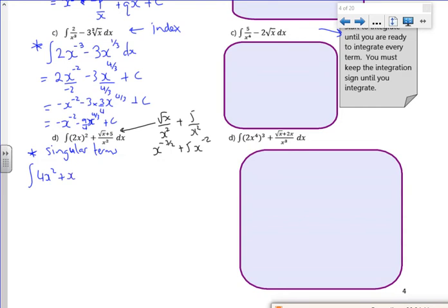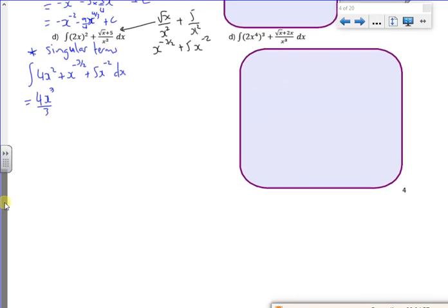So that's going to be 4x cubed over 3. So you can do it as all over 3, or you can do it as a fraction. I quite like fractions. And then add 1 to the power, it's minus 1 half. Divide it by minus 1 half.